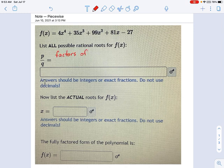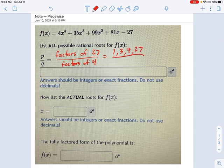P is going to be factors of 27, and Q is factors of 4. So buckle up. Factors of 27, here's how we do this: 1, 3, 9, and 27. And factors of 4 is 1, 2, and 4.